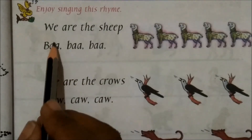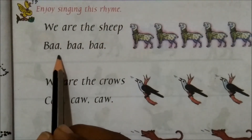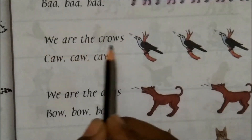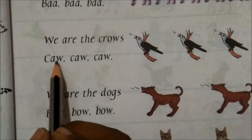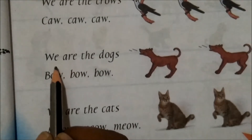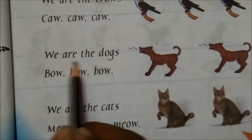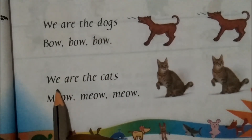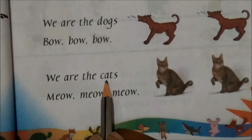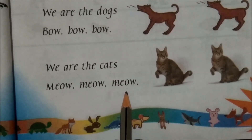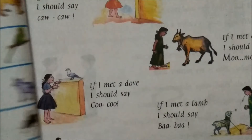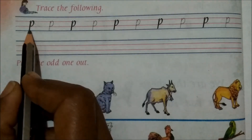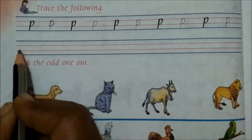We are the dogs now. We are the cats now. This is P — you trace like this.